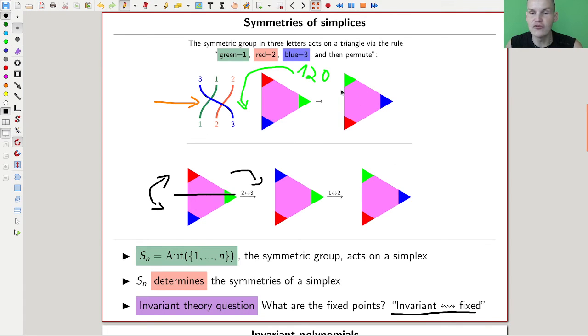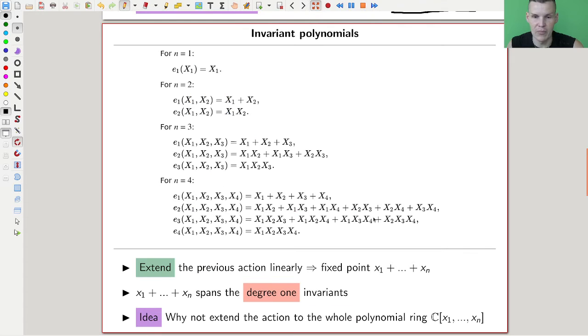And usually algebraists like to work on some linear state, like a vector space. And if you go to a vector space you can actually generate a fixed point. So if you are allowed to take sums of those guys, then kind of the sum of the x, well, if you think of x1 as like being green, x2 as being blue, and x3 as being red, then the sum of all of them is clearly invariant, permuting them around. So here, this guy, x1 plus x2 plus x3, x green plus x red plus x blue, and people nowadays would say that these are the degree 1 invariants, because give every symbol here, every variable, degree 1, then this is the degree 1 invariant.